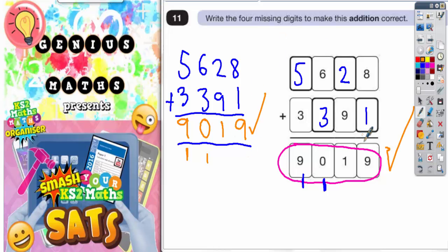Therefore, the missing numbers I've got here. 5, 2, 3 and 1 must all be correct. Because the whole thing works out 9,019.